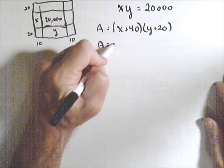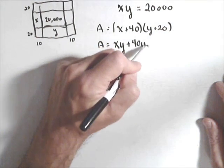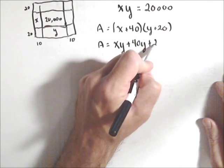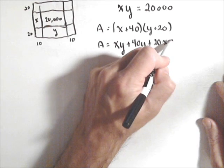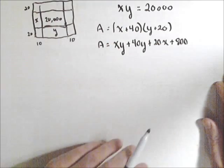Maybe not. Let's just see what it is. We got xy + 40y + 20x + 800. So that comes from just foiling everything out in there.